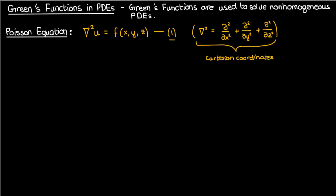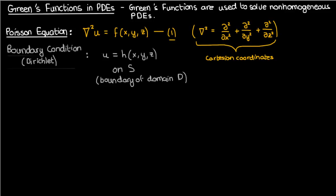I've labeled this equation as 1. The boundary condition on this PDE is a Dirichlet boundary condition, where the function u is specified on the boundary of the domain d, and is equal to h on that boundary. This boundary I'm going to call s, and this equation I'm going to label as 2.